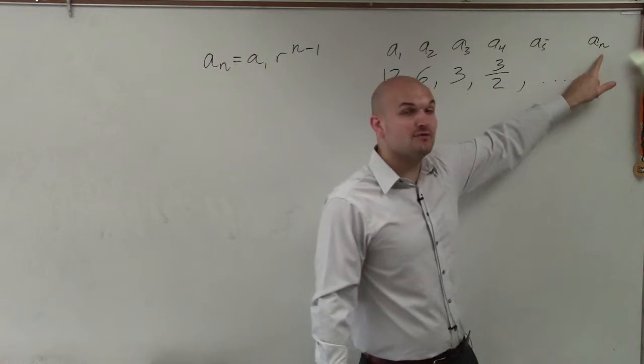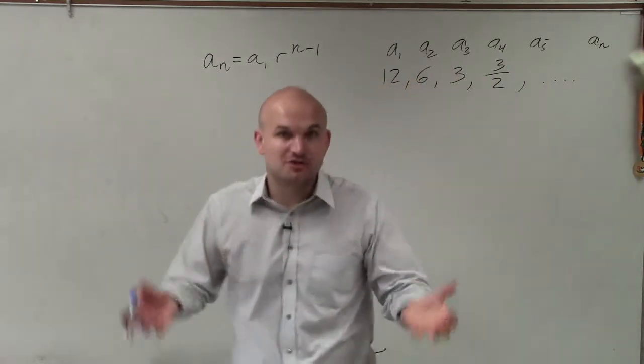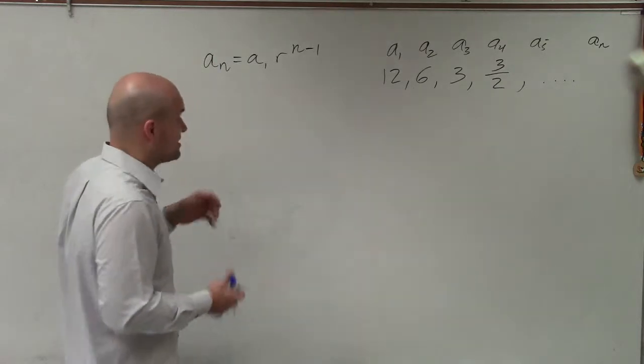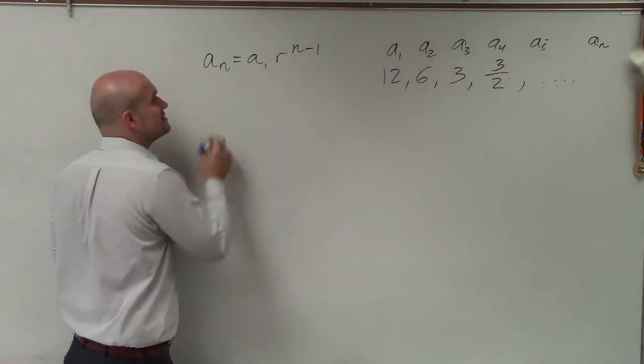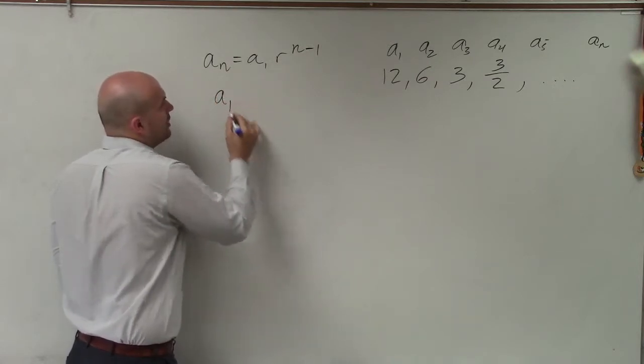So n is going to represent the number in our sequence, and a sub n is going to represent that value of that number in the sequence. So here's our general rule for that. And to figure out the rule, we need to know a sub n and what r is. Well, I'm sorry, a sub 1.